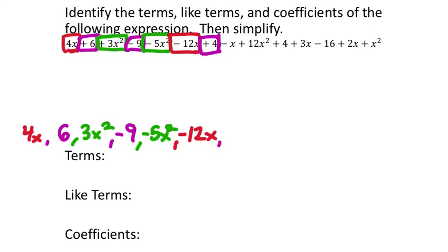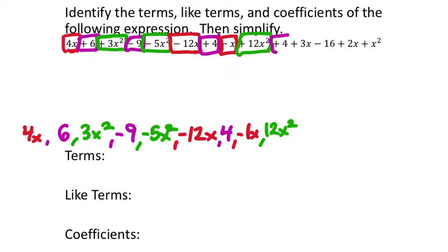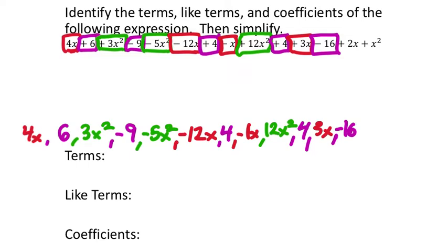Continuing through the expression: positive 12x squared, then another constant of 4, then positive 3x, then the constant negative 16, then positive 2x, and finally at the end I'll show it as 1x squared rather than just x squared to make the phantom one visible. Those are all 14 terms.